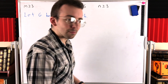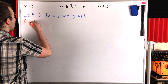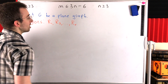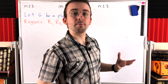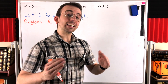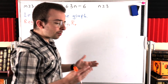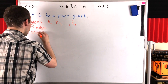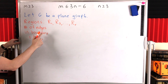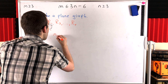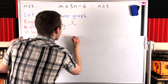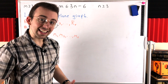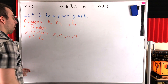For convenience, let's build up some notation. We'll call the regions in our plane graph R1, R2, and so on, up through Rr. Regions have boundaries — the boundary of a region consists of the vertices and edges incident with that region. Each region has some number of edges in its boundary. We'll let Mi denote the number of edges in the boundary of region Ri.